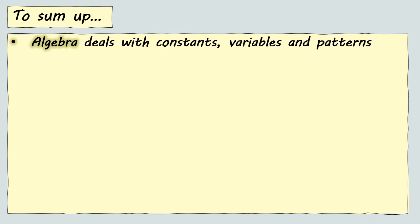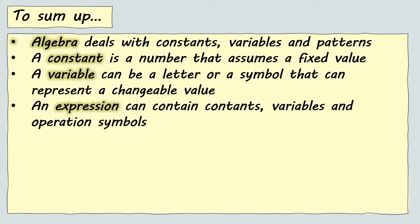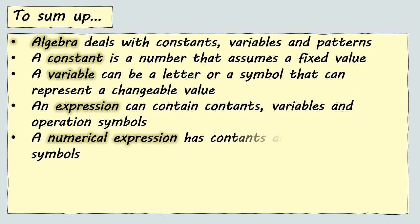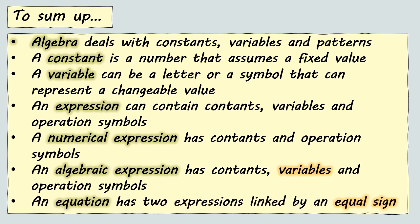To sum up, algebra deals with constants, variables, and patterns. A constant is a number that assumes a fixed value. A variable can be a letter or a symbol that can represent a changeable value. An expression can contain constants, variables, and operation symbols. A numerical expression has constants and operation symbols, while an algebraic expression has constants, variables, and operation symbols. An equation has two expressions linked by an equal sign.